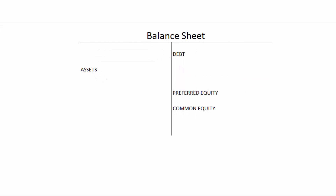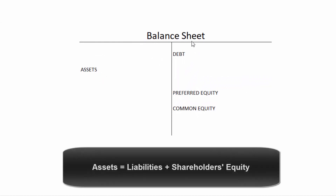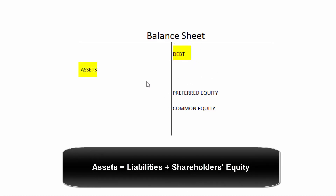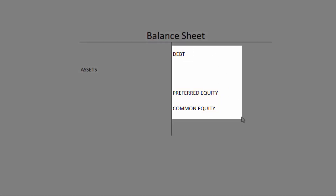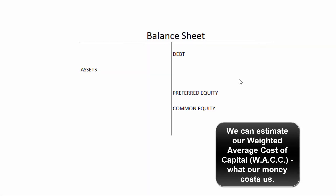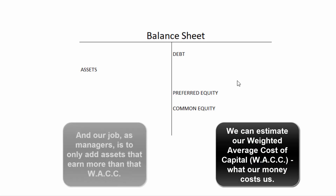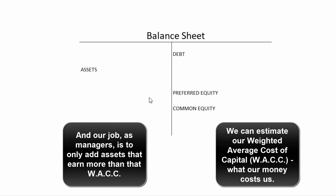Big picture — why do we need to know net present value and internal rate of return? On a company's balance sheet, the right-hand side is what it owes, and the difference between what it owns on the left and what it owes on the right is the equity in the business. All this capital on the right-hand side has a cost. We calculate the after-tax cost of money on the right-hand side — that's called the weighted average cost of capital — and we need to earn at least that much when we put new assets on the left-hand side.